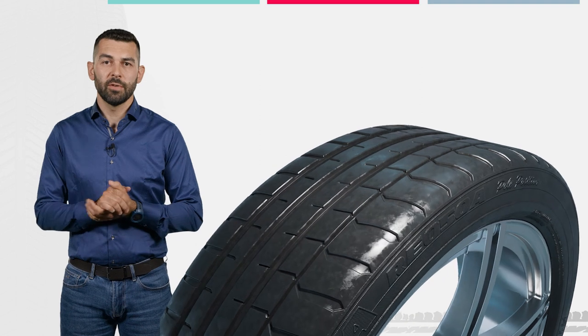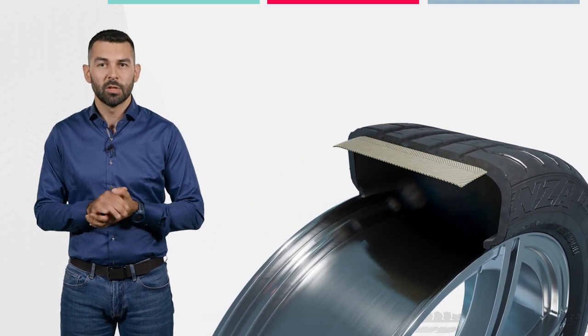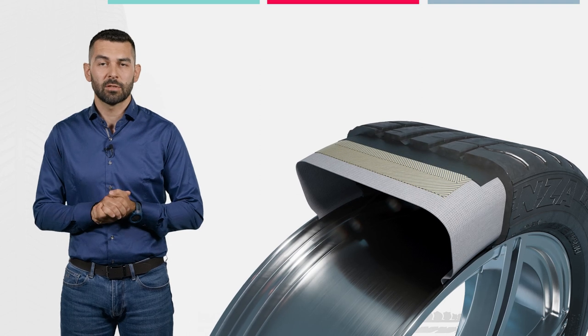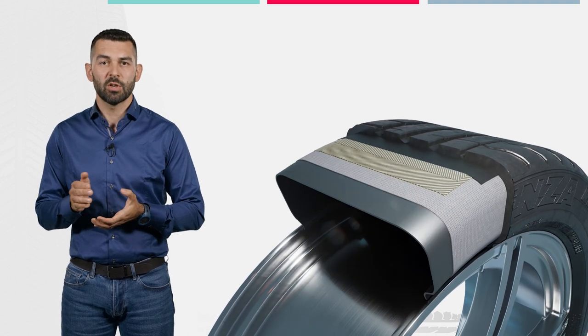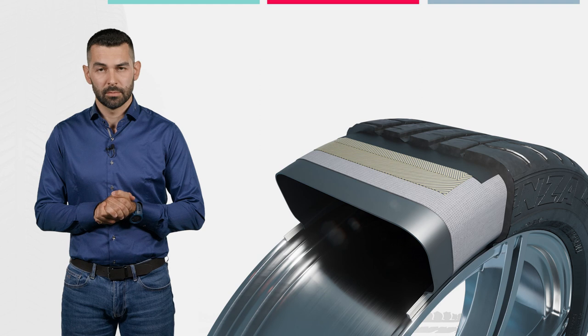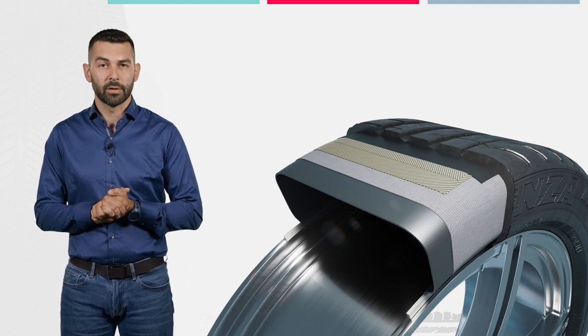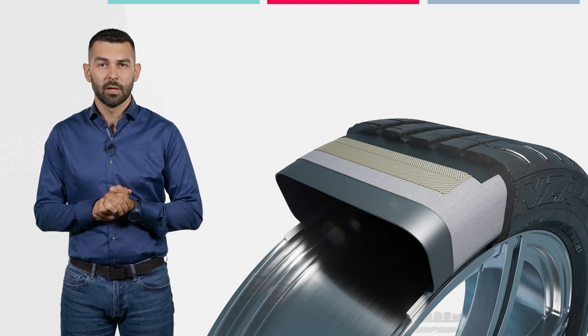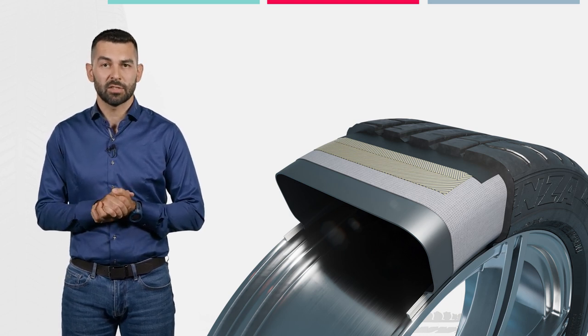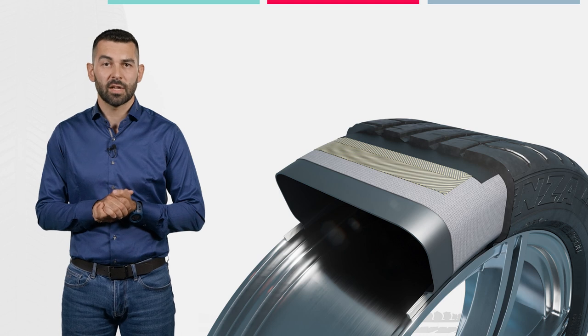The tire consists of different elements with different functions. Among the most important element is first the tire tread, which is responsible for the contact with the road. From the outside, it looks like the tire is made only of rubber. This is not the case. There are also steel belts and textile inserts, the textile carcass.